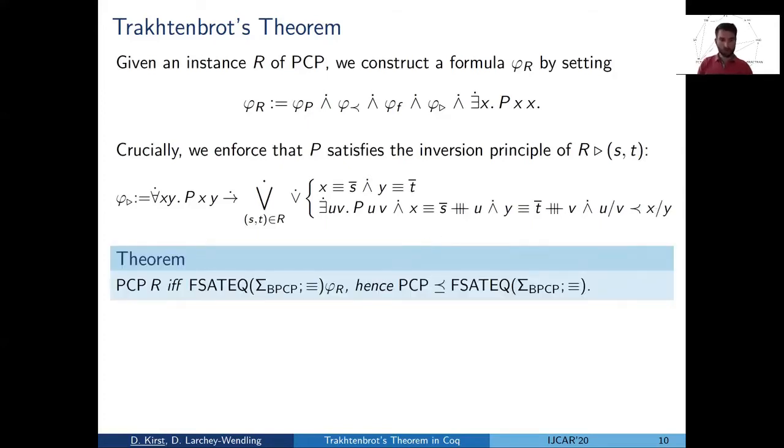And that's all. So now we are just left to verify that this reduction is correct. That indeed PCP has a solution for the instance R if and only if phi R has a finite model. And we can quickly step through the proof.